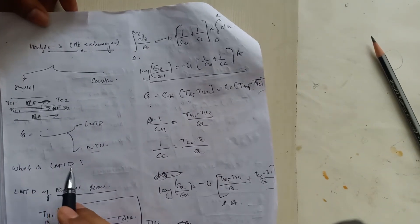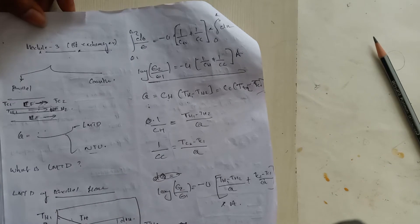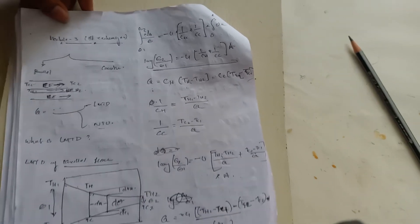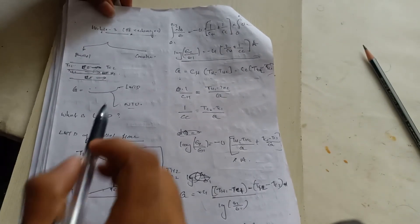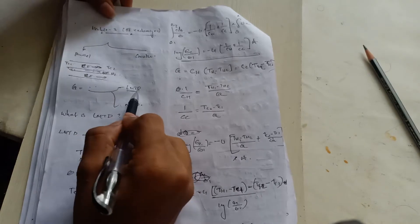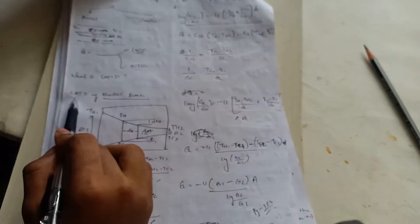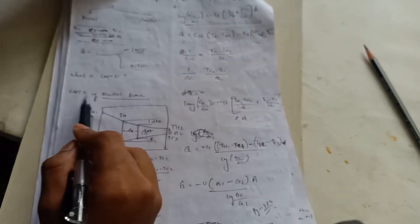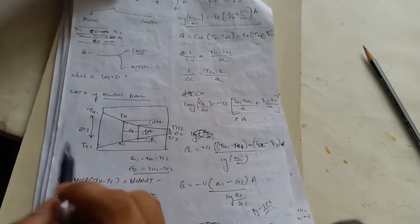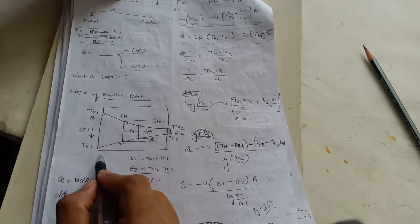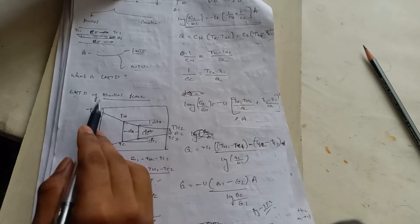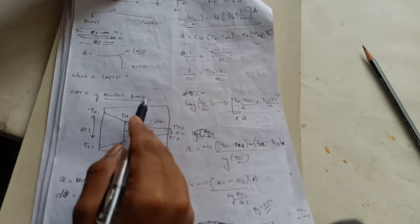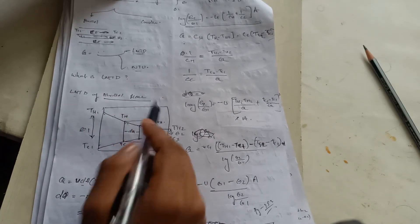We need two equations to analyze heat exchangers. The first one is LMTD — the Logarithmic Mean Temperature Difference — and the second one is the NTU method. Here is a very important derivation: the LMTD of a parallel flow heat exchanger.